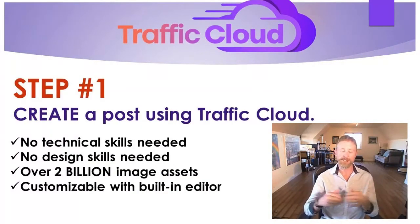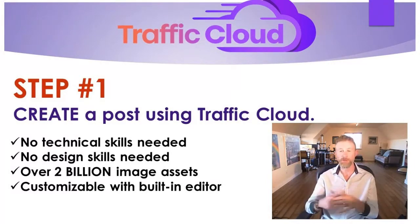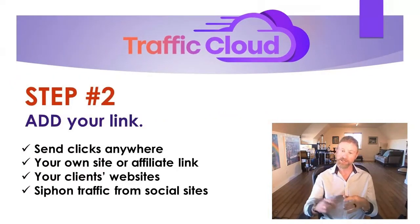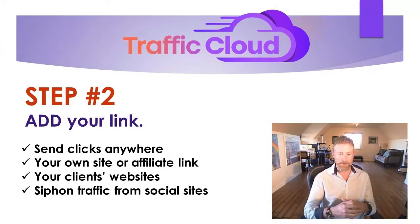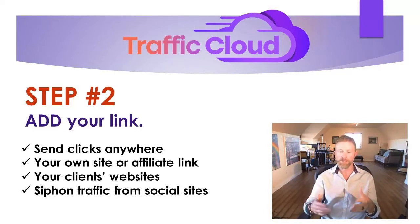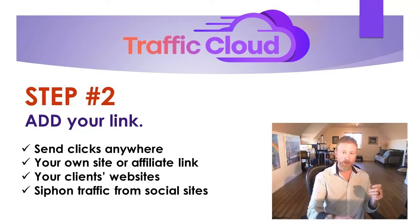Here's how it works in three easy steps. Step one: create a post using Traffic Cloud. There are absolutely no technical or design skills required. Traffic Cloud is connected to a library of over 2 billion media assets, which you can search by keyword. You can then customize those images with your own text or call to action using the built-in point-and-click editor. Step two: add your link. You can send the clicks anywhere — it could be your own site, an affiliate link, or your client's website if you're running an agency. Each post will be clickable, so you can take traffic directly from the social platforms to the link of your choice.